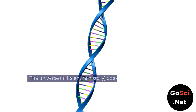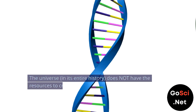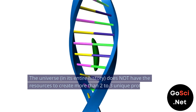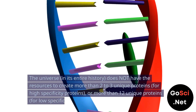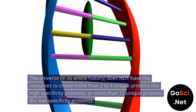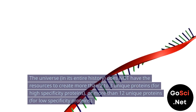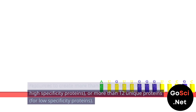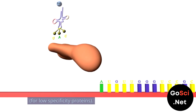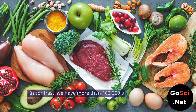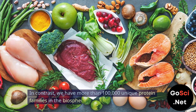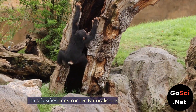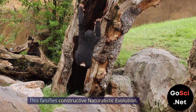The universe, in its entire history, does not have the resources to create more than 2 to 3 unique proteins for high specificity proteins, or more than 12 unique proteins for low specificity proteins. In contrast, we have more than 100,000 unique protein families in the biosphere. This falsifies constructive naturalistic evolution.